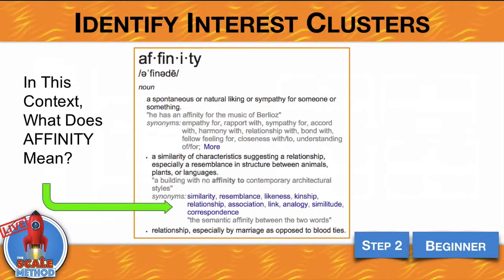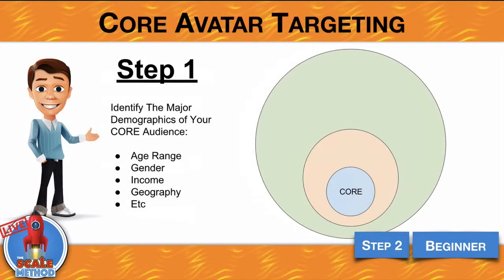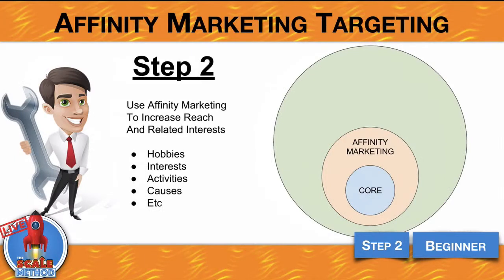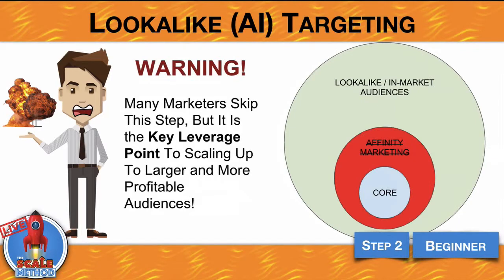We want to figure out who is outside of that avatar but very closely related — how can we scale our traffic? Build your audience in three steps. Step one: your core audience — focus on your avatar's age range, gender, income, geography, etc. Step two: affinity marketing — what are their hobbies, interests, activities, causes, who may they hang around, who else may enjoy your content or products? Step three: lookalike audiences, which is the genius level — this is where the artificial intelligence of these major platforms really starts to do all the work. Many marketers skip this step, but it's the key leverage point to scaling up to larger, more profitable audiences.